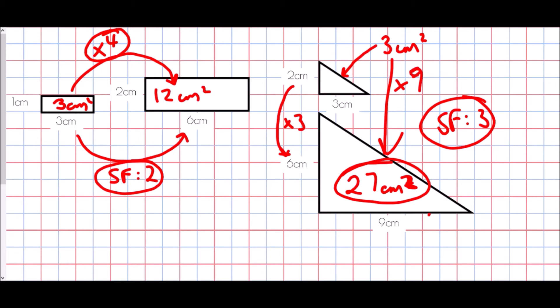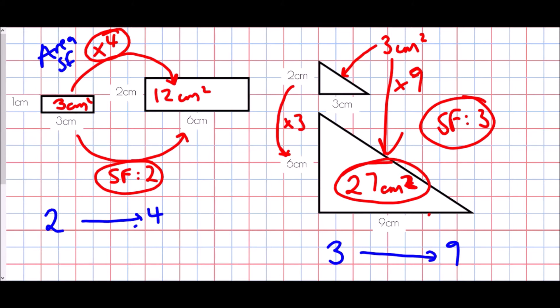Why might that be the case? Well, the question is: what is the relationship between the number 2 and the number 4, and the relationship between the number 3 and the number 9 — basically, between our linear scale factor and our area scale factor. Well, if I square the number 2, I get 4. If I square the number 3, I get 9. And the reason for that is that our scale factor of doubling has happened in two dimensions — times by 2 once and times by 2 again, times by 3 once and by 3 again. So because we've used the scale factor twice, we have to square it.